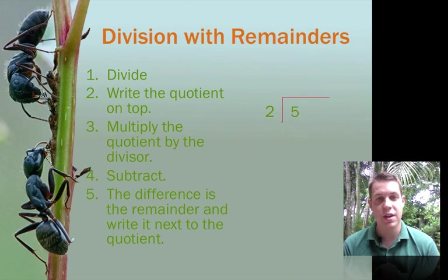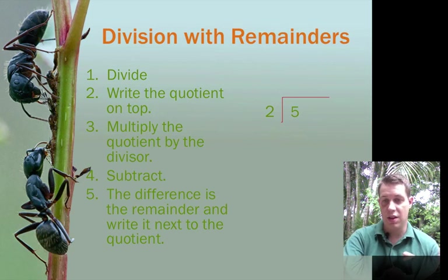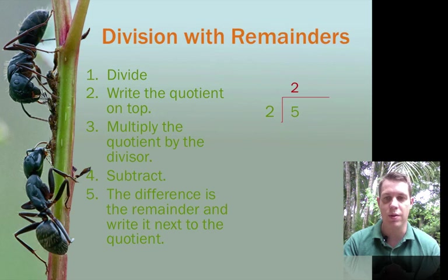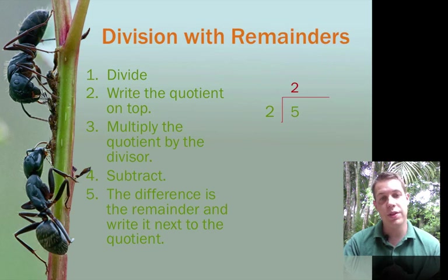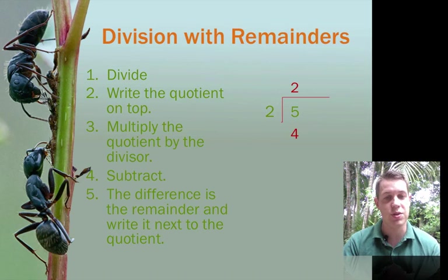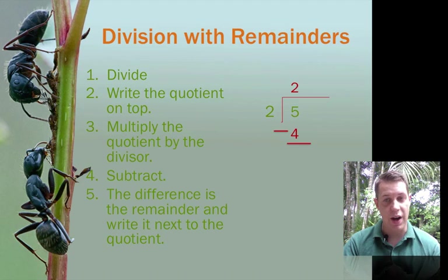So these are the final steps for our division with remainders. First, we need to divide and think, in this example, how many times can 2 go into 5? Well, we already know it's 2 times evenly. We put the quotient on the top. The 2. Then we multiply the quotient by the divisor. 2 times 2 equals 4.